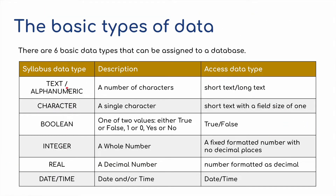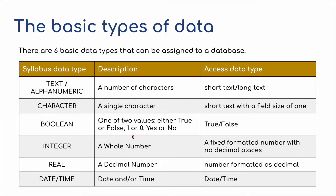Alphanumeric refers to a number of characters — a short text or a long text, sentences, a phrase, a word — all can be stored under text alphanumeric. A character, though, is a single character, i.e. A, B, C — a letter of the alphabet. Boolean is either true or false, 1 or 0, yes or no — basically opposites.